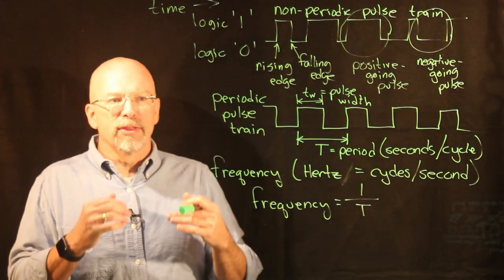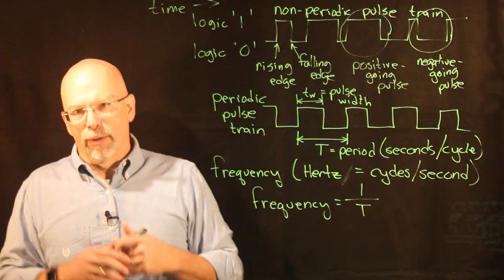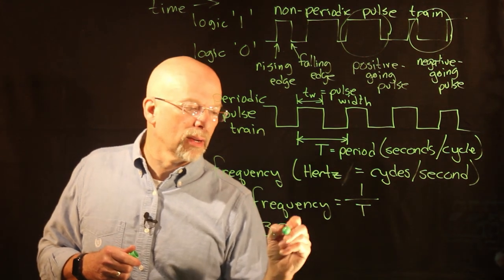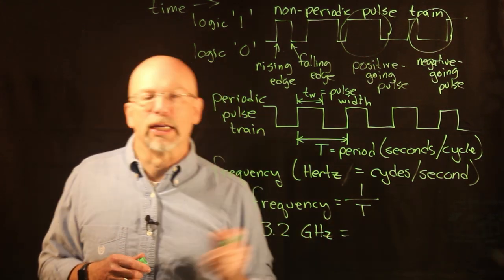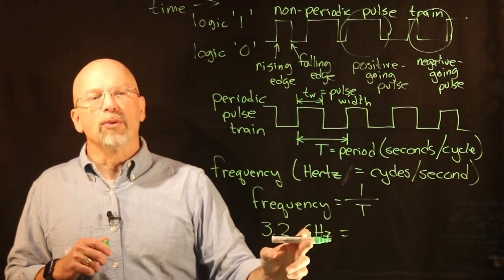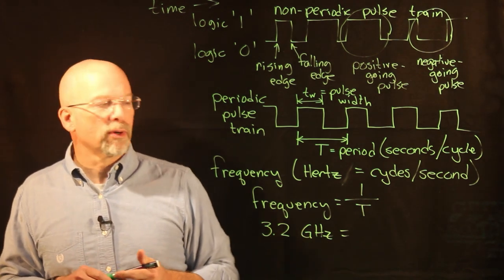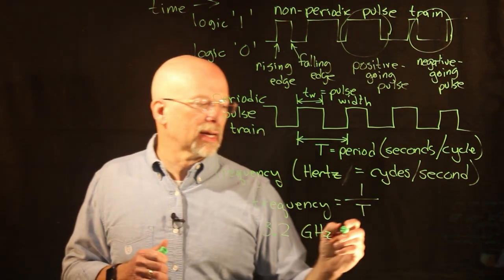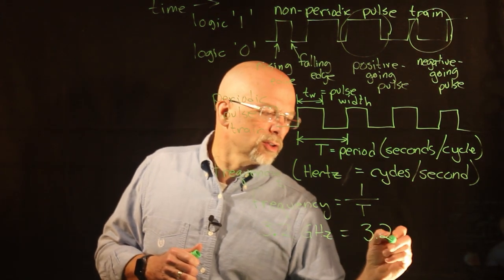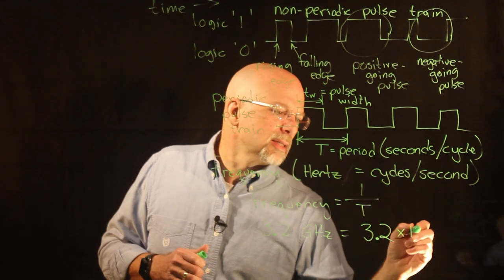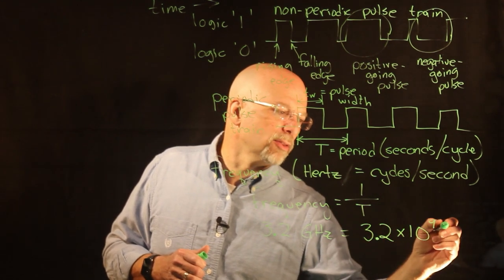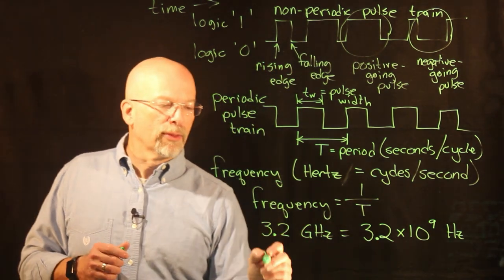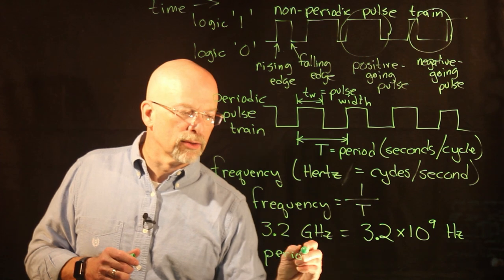Let's go ahead and say that I've got a 3.2 gigahertz machine. Gigahertz, this G right here of course represents some sort of a multiplier, and in the case of giga that means it's 3.2 times 10 to the 9th hertz or cycles per second.